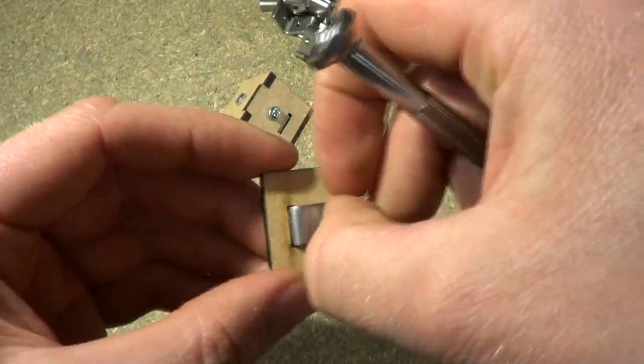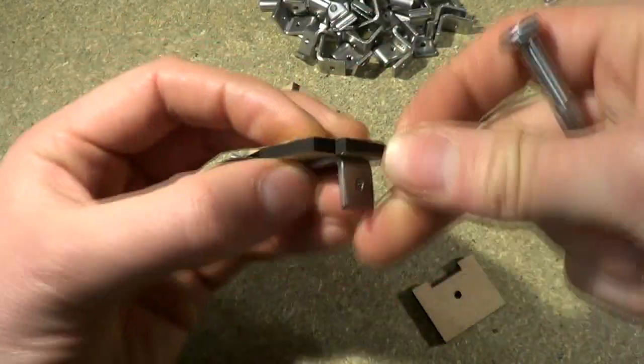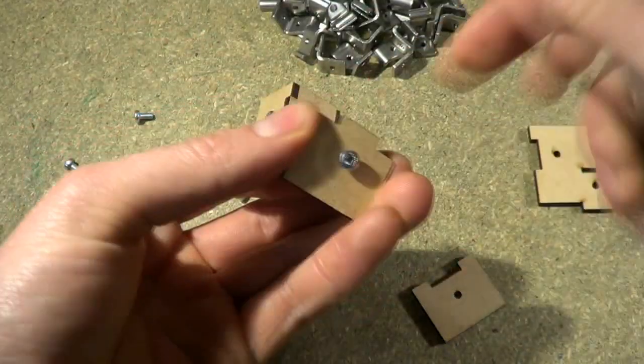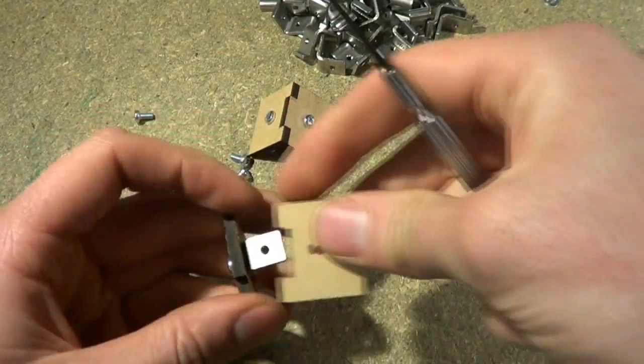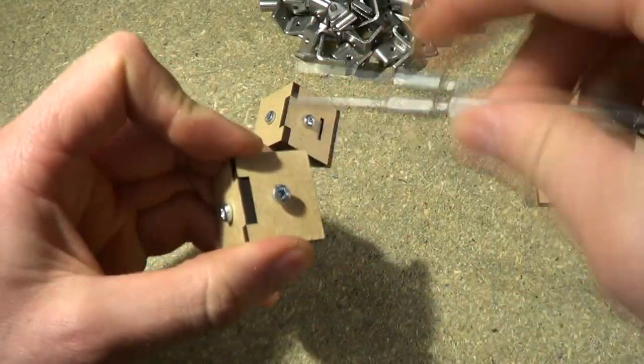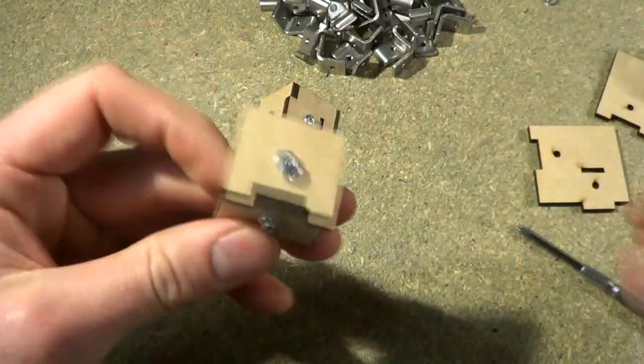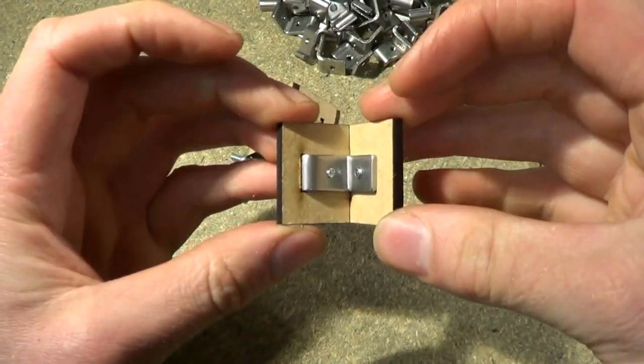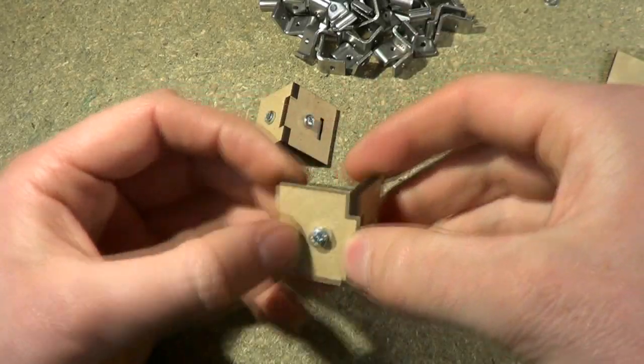So the tab still locates in it but it doesn't show from the other side, and it still fits together as nicely as before. So you wouldn't see any of the locating tabs.